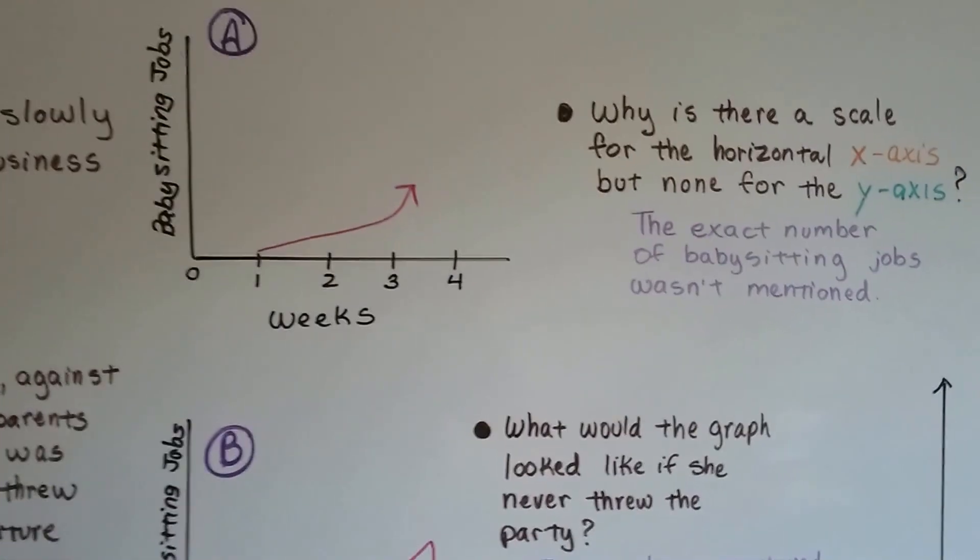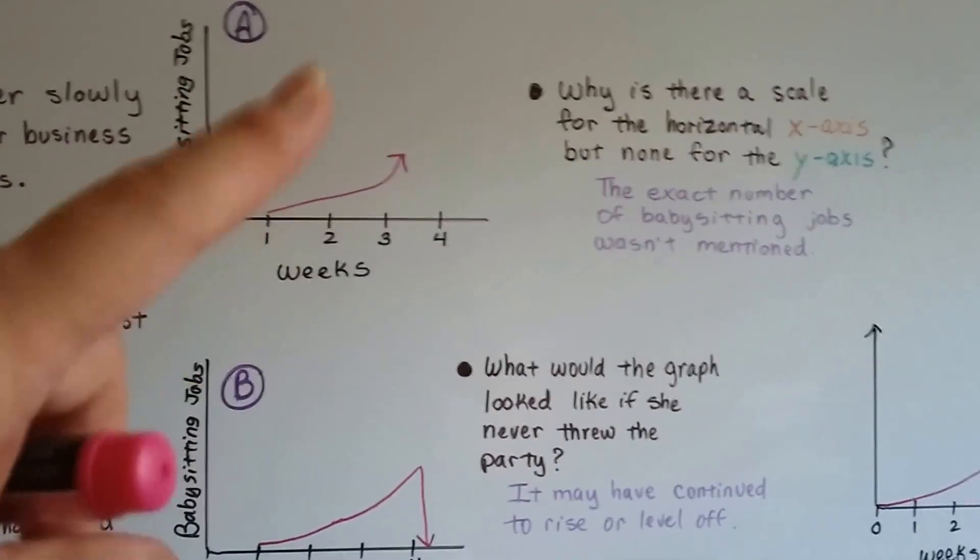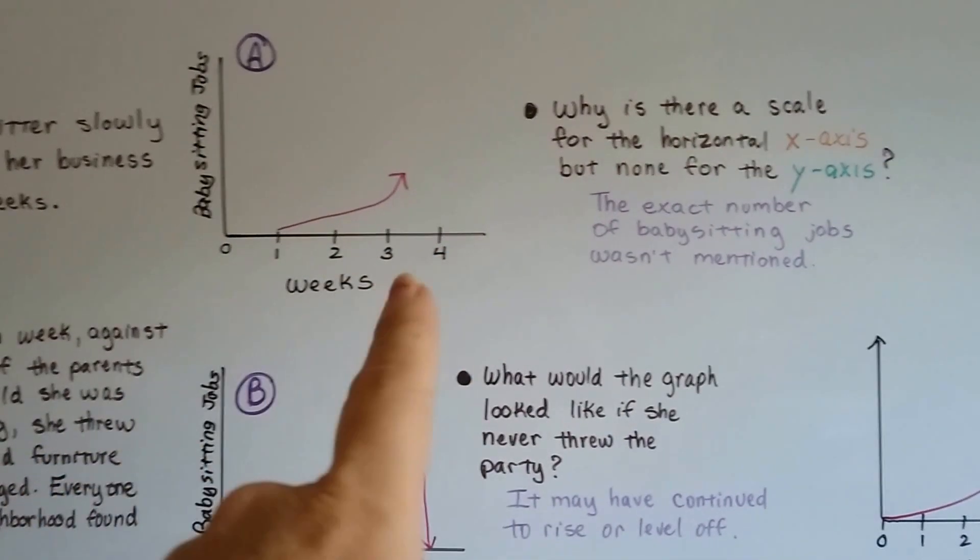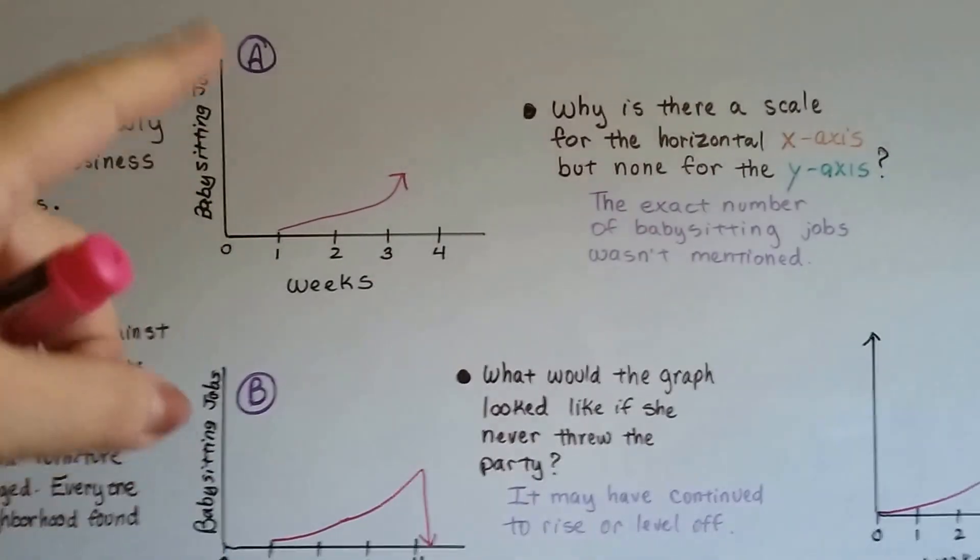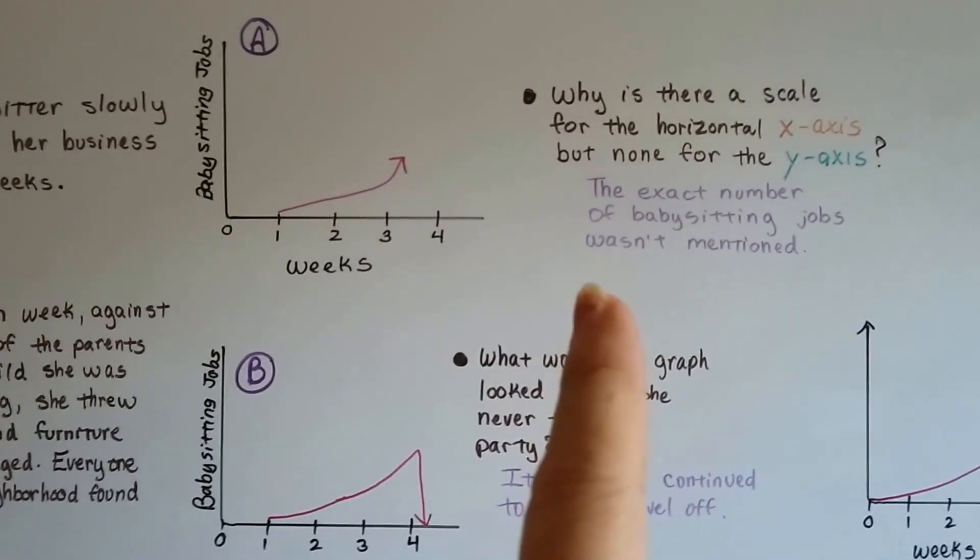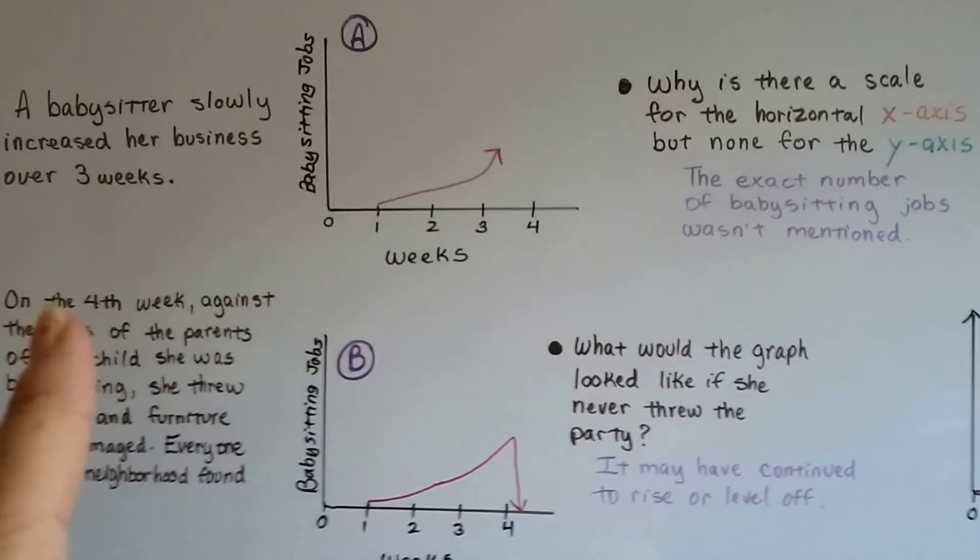So when we look at this graph, either one of these, why is there a scale for the horizontal, for the weeks, for the horizontal x-axis, but there isn't one for the y? Well, the exact number of babysitting jobs was never mentioned.